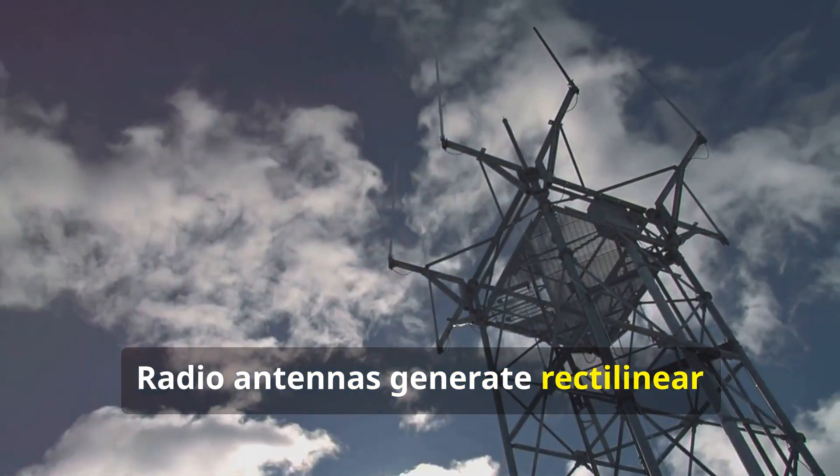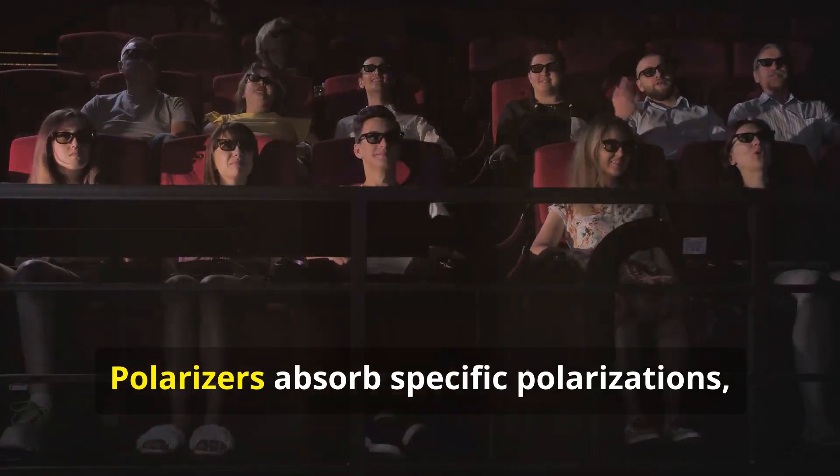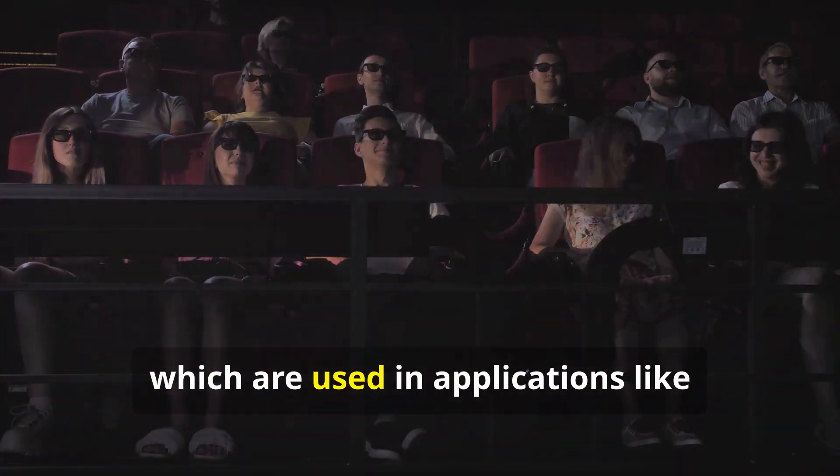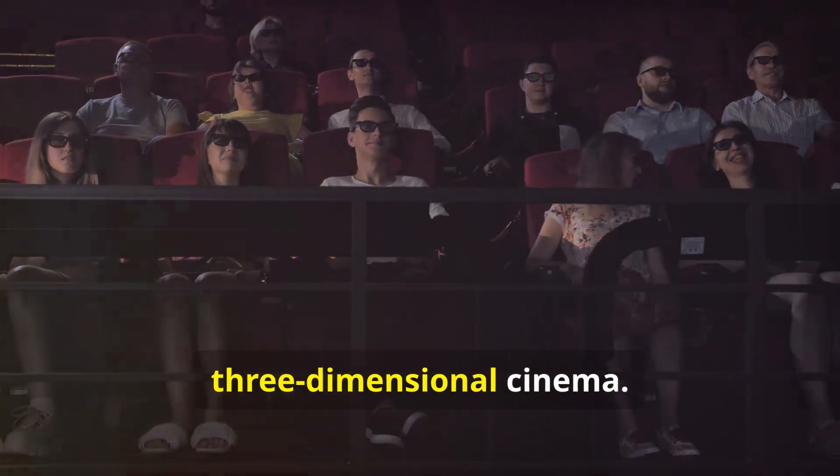Radio antennas generate rectilinear polarized waves. Polarizers absorb specific polarizations, which are used in applications like three-dimensional cinema.